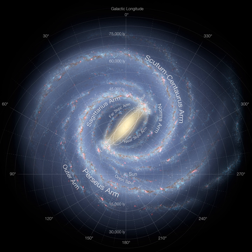Detection of Population III stars is a goal of NASA's James Webb Space Telescope. New spectroscopic surveys, such as Segway or SDSS-2, may also locate Population III stars. Stars observed in the Cosmos Redshift 7 galaxy at z = 6.60 may be Population III stars. Such stars are likely to have existed in the very early universe, i.e., at high redshift, and may have started the production of chemical elements heavier than hydrogen that are needed for the later formation of planets and life as we know it.